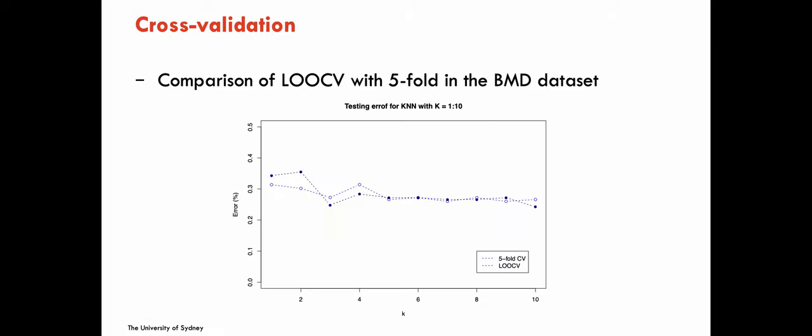The graphical comparison of five-fold and leave-one-out results shows a little difference, especially when the number of neighbors is low, but they tend to be very similar as the number of neighbors increases.